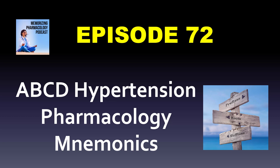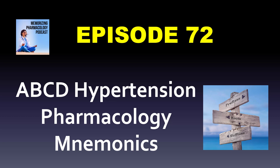I'm going to go over antihypertensives in a way that hopefully makes a bit of sense. It's actually easier to compare them side by side. Let's start with what the ABCD of hypertension really is — the drug classes: ACEIs, ARBs, the alpha-1 blockers, the beta blockers, calcium channel blockers, and diuretics. There are also oddball ones: the alpha agonists like clonidine and methyldopa, the peripheral vasodilators hydralazine and nitroprusside, and then the direct renin inhibitor aliskiren. But these are the heart and soul of antihypertensive therapy.